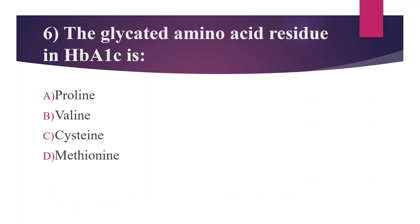Sixth question: The glycated amino acid residue in HbA1c is — Option A: Proline, Option B: Valine, Option C: Cysteine, Option D: Methionine. Answer is Option B, Valine. HbA1c is known as the glucose memory test. It gives information about glycemic control over the last 120 days. In HbA1c, glucose binds to the N-terminal valine residue of each beta chain of hemoglobin.